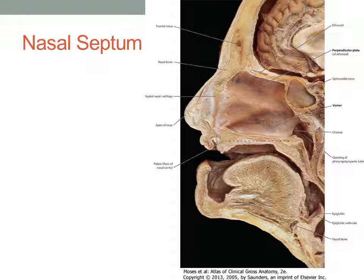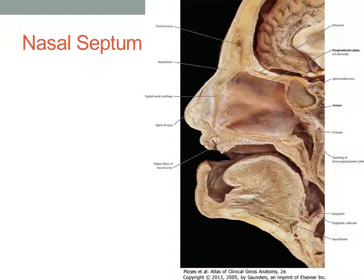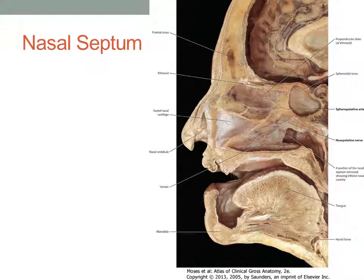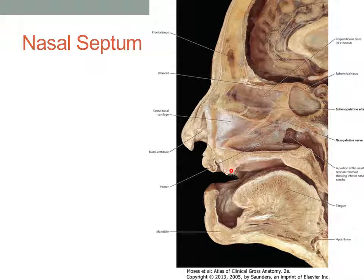Here's a review slide with a cadaveric photograph from the Moses et al. Clinical Gross Anatomy Atlas. This is what the dissection should more or less look like with the mucosa of the nasal septum still intact. With more of the mucosa removed, you can appreciate some of the structures we're supposed to find: here's your sphenopalatine artery, here's the nasopalatine nerve on its way to the incisive foramen, and here's one of your paranasal sinuses — the sphenoidal sinus.